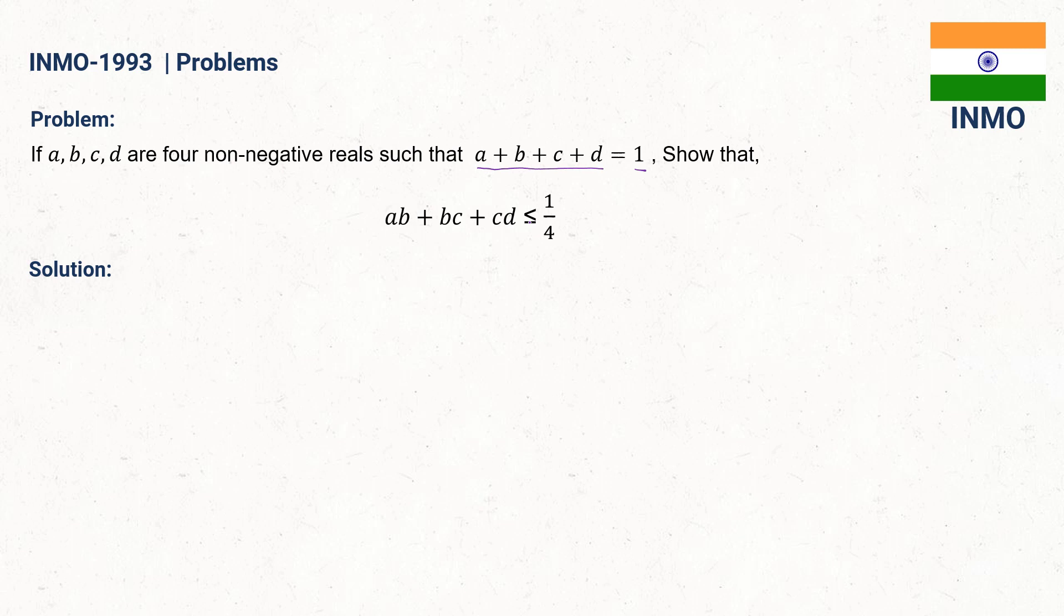So let's find out the solution. As you can see here, there is a less than or equal to symbol. That means we can clearly understand that this is an inequality problem.